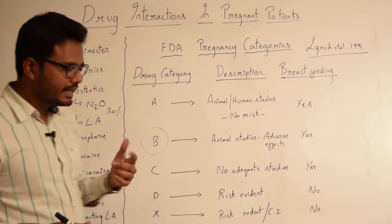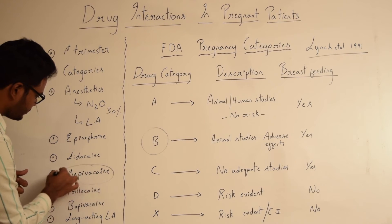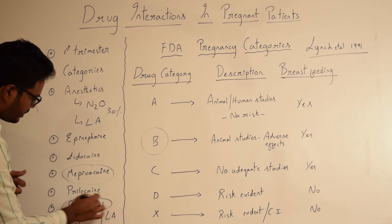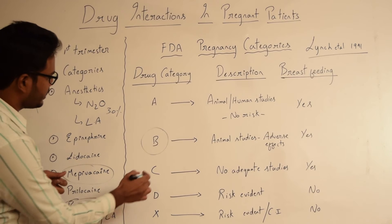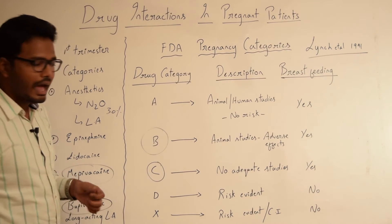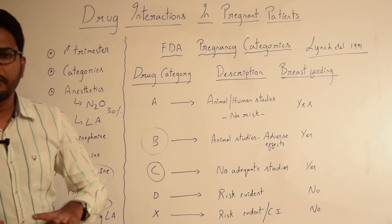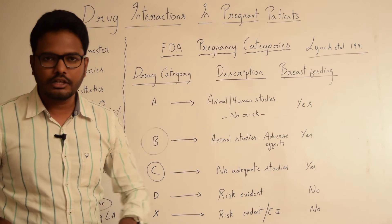However, certain agents such as Mepivacaine, Bupivacaine and Articaine, they fall under pregnancy category C and they should not be administered during pregnancy. They should be avoided.